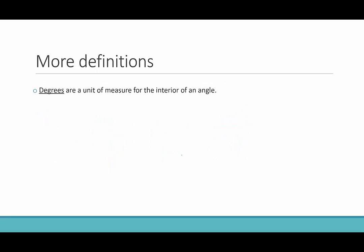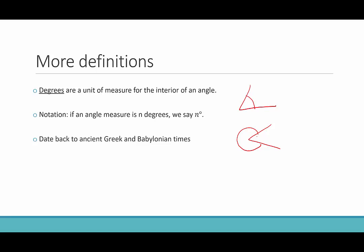Another definition. So this one we're probably familiar with, and that's the idea of degrees as a unit of measure. Degrees are a unit of measure for the interior of an angle. For the notation, if we're looking at an angle measure that's n degrees, we would say n and then use the little degree sign. And then generally when we draw an angle, we might put it like this that we know. We put a little arc in there so we know which is the interior, because technically we could have an angle like this where we're saying, nope, this is the interior of that angle.